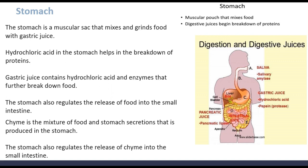The stomach is a muscular sac that mixes and grinds food with gastric juice. Hydrochloric acid in the stomach helps in the breakdown of proteins. Gastric juice contains hydrochloric acid and enzymes that further break down food. The stomach also regulates the release of food into the small intestine. Chyme is the mixture of food and stomach secretions that is produced in the stomach and is useful for the production of energy.